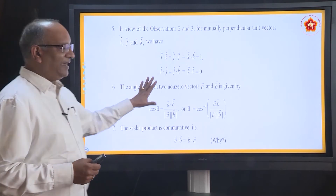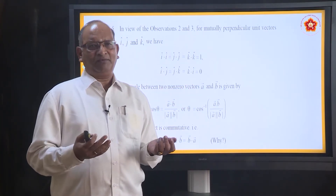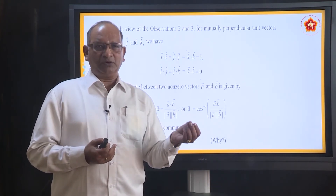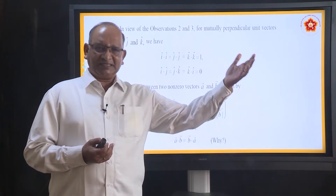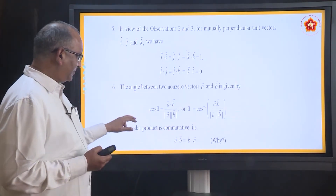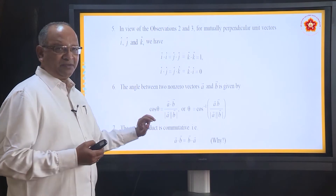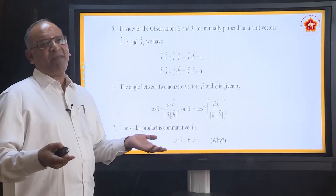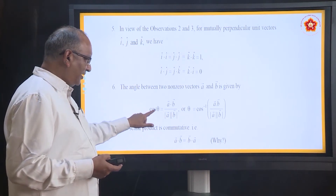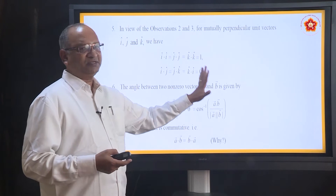How to find the angle between two vectors? Same formula — what is the formula we derived? A dot B equal to AB cos theta. So what is cos theta? A dot B divided by AB. Cos theta equals A dot B by AB. If you have to find out theta, take cos inverse of that.